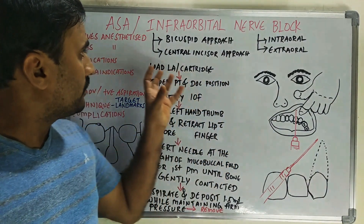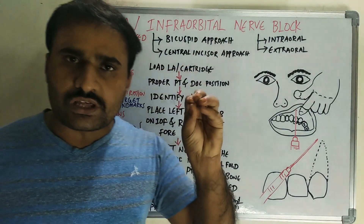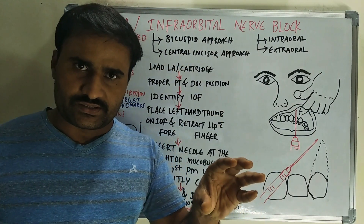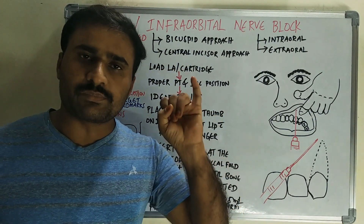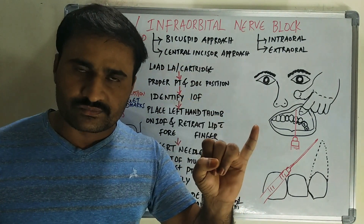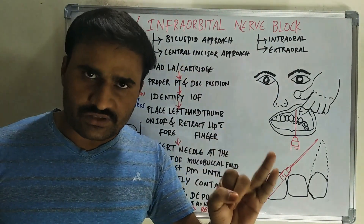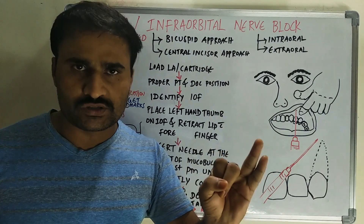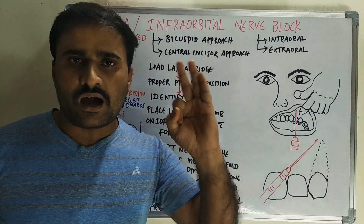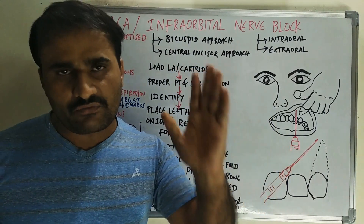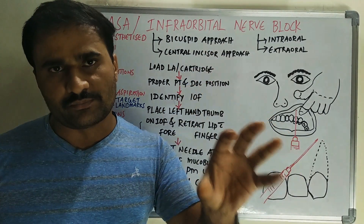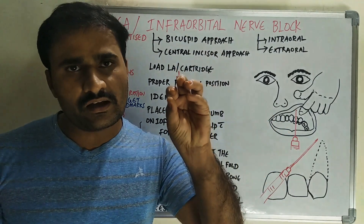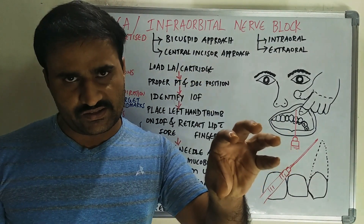Due to the terminal branches, the infraorbital nerve block also supplies the lower eyelid, the lateral part of the nose, and half of the upper lip. Those areas are also anaesthetized.